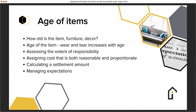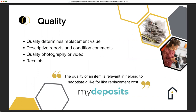Quality obviously determines replacement value. Using the carpet as an example: if it's a very high quality carpet at £26 to £45 per square meter, then a replacement would be a similar value. Equally, if the carpet is £5 to £10 per square meter then the quality is likely to be a lot less, and you wouldn't expect the tenant to be paying at the higher level for an item that is actually of a lower quality and value.